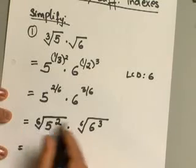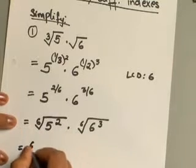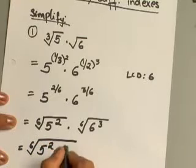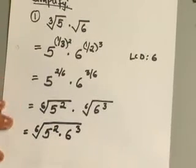Now that they have the same index, now you can apply your product rule and you will end up with 5 squared times 6 to the 3rd under the same radical.